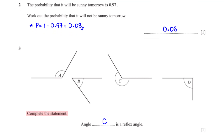Complete the statement: angle blank is a reflex angle. Angle C is a reflex angle because it is greater than 180 degrees and less than 360 degrees.